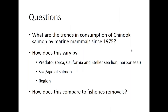The key questions in this study are: what are the trends in consumption of Chinook salmon by marine mammals over the last four decades? How does this vary in terms of different predators — orcas, California and Steller sea lions, and harbor seals? How does this vary depending on whether we're thinking about adult versus juvenile Chinook salmon? How does it vary across space? And finally, we'll compare this predation — this consumption removal — to fisheries removals.